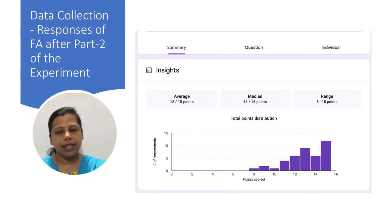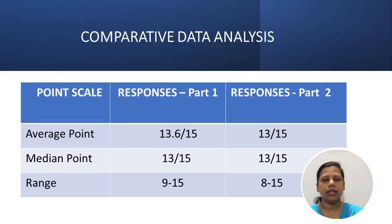After getting the data of both formative assessments, the data was analyzed and I could clearly see a difference in the terms of point values. With the experimental group 1, I could see that the average point obtained was 13.6 out of 15, whereas in the experiment 2, it declined to 13 out of 15. Talking about the point range, for the experiment group 1, it started from 9 to 15, whereas it declined in experiment 2 to 8 to 15. This difference in the values clearly indicated the role of diagnostic assessments in my class.